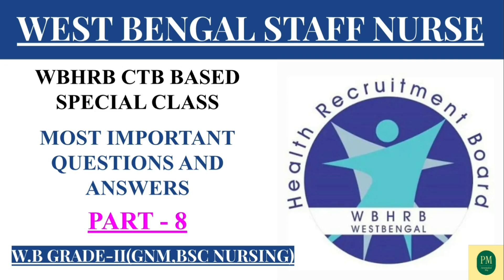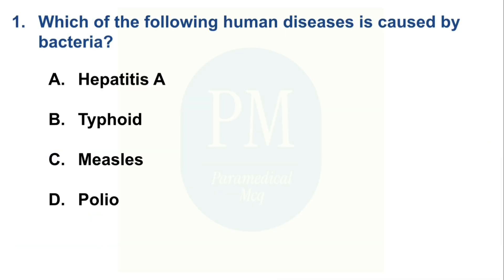The first question: Which of the following human diseases is caused by bacteria? Option A: Hepatitis A, Option B: Typhoid, Option C: Measles, Option D: Polio. The correct option is Option B, Typhoid.